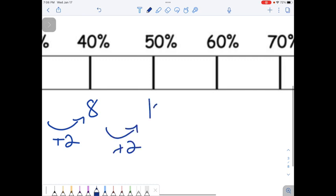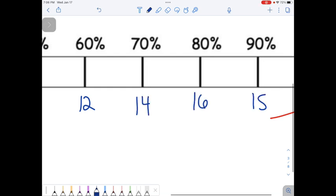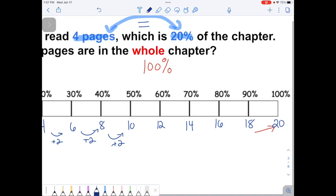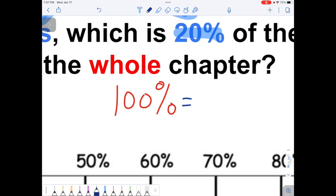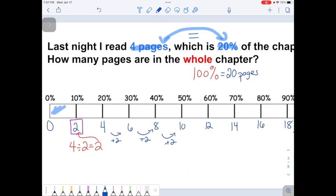And then I'm going to keep going. Plus 2 is 10, 12, you get the idea. 14, 16, 18. The number underneath 100% is 20, which means that the whole chapter, or 100%, is 20 pages. I read a pretty small amount. I read, I'm going to color this in, just these first two parts. So I actually have a long ways left to go in the chapter.